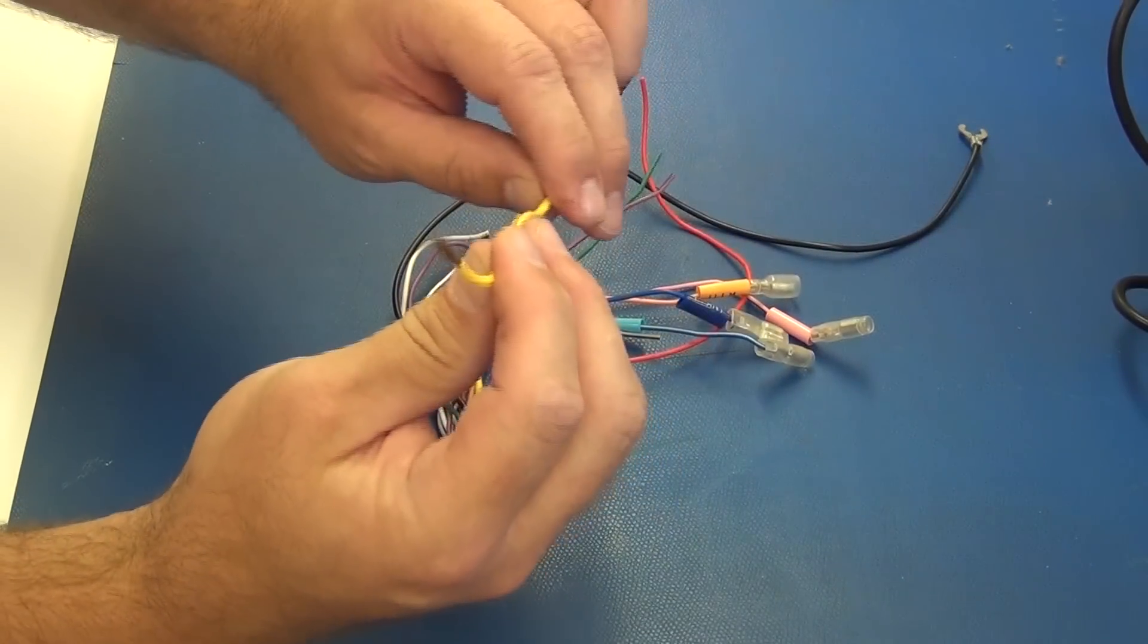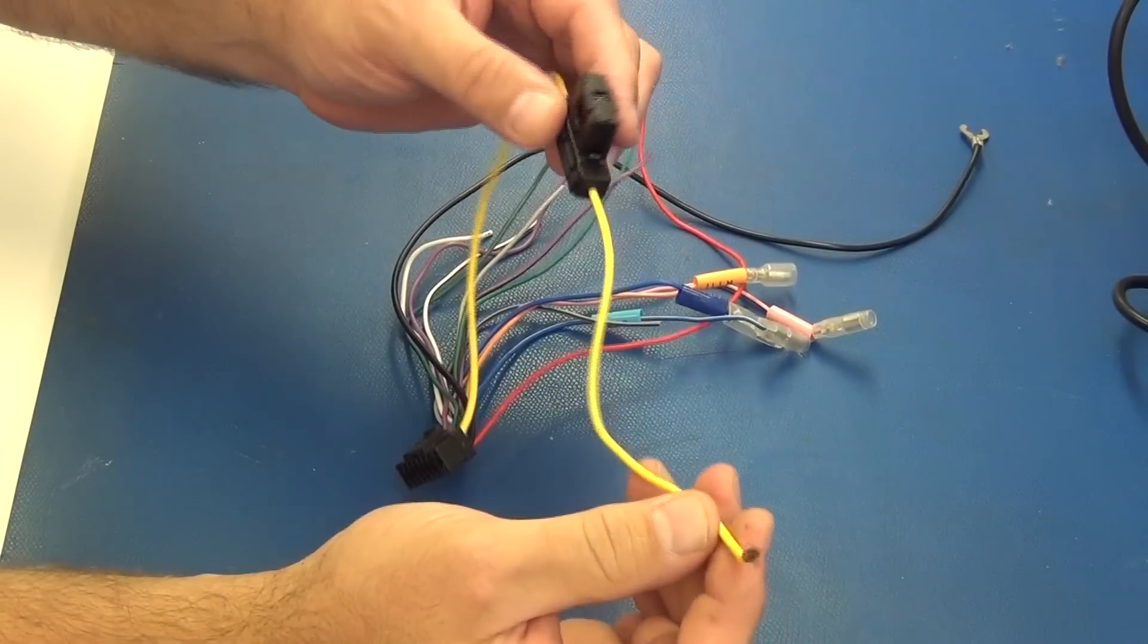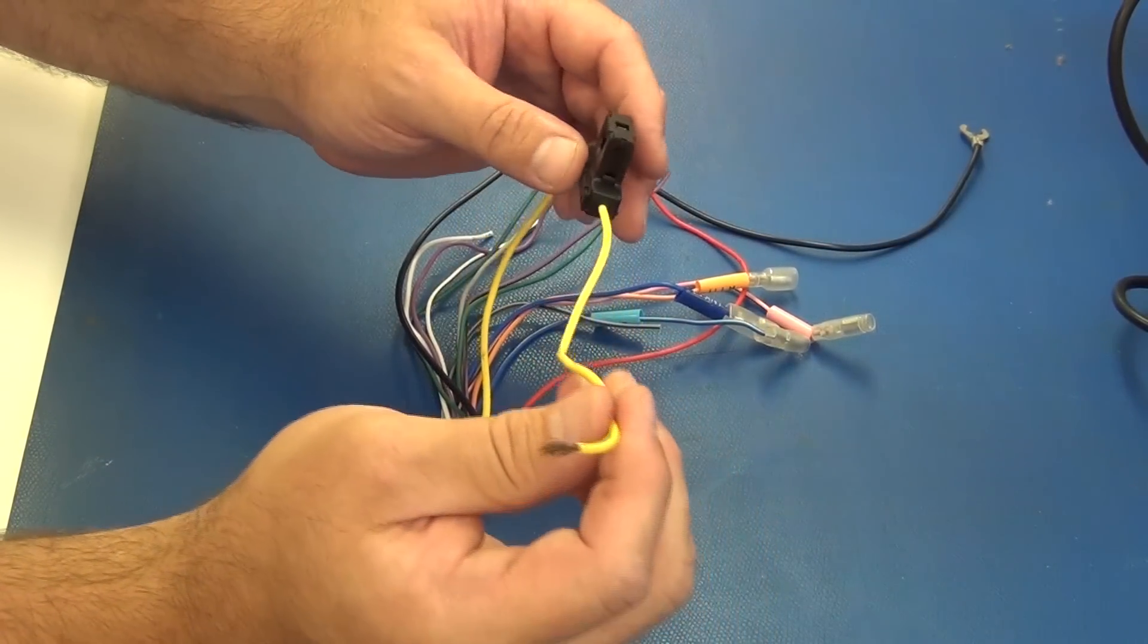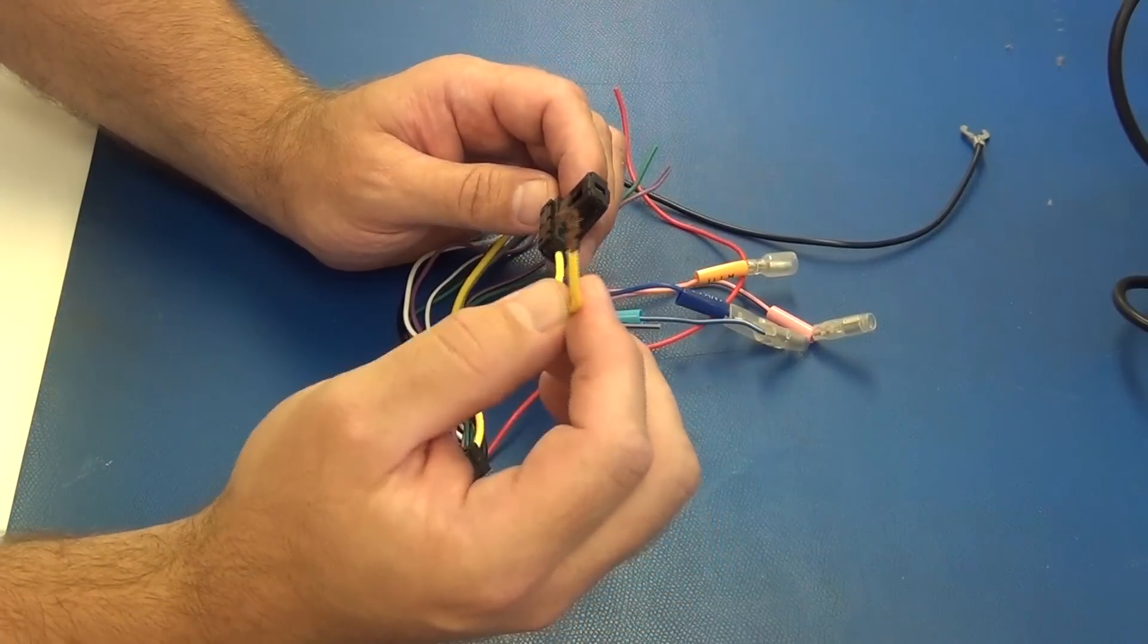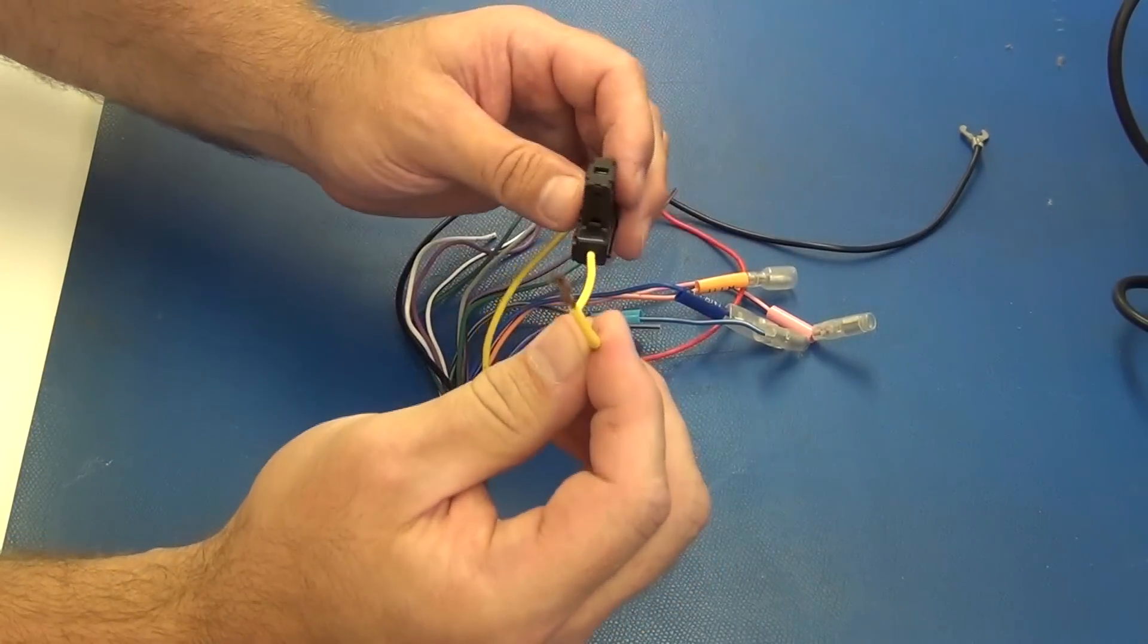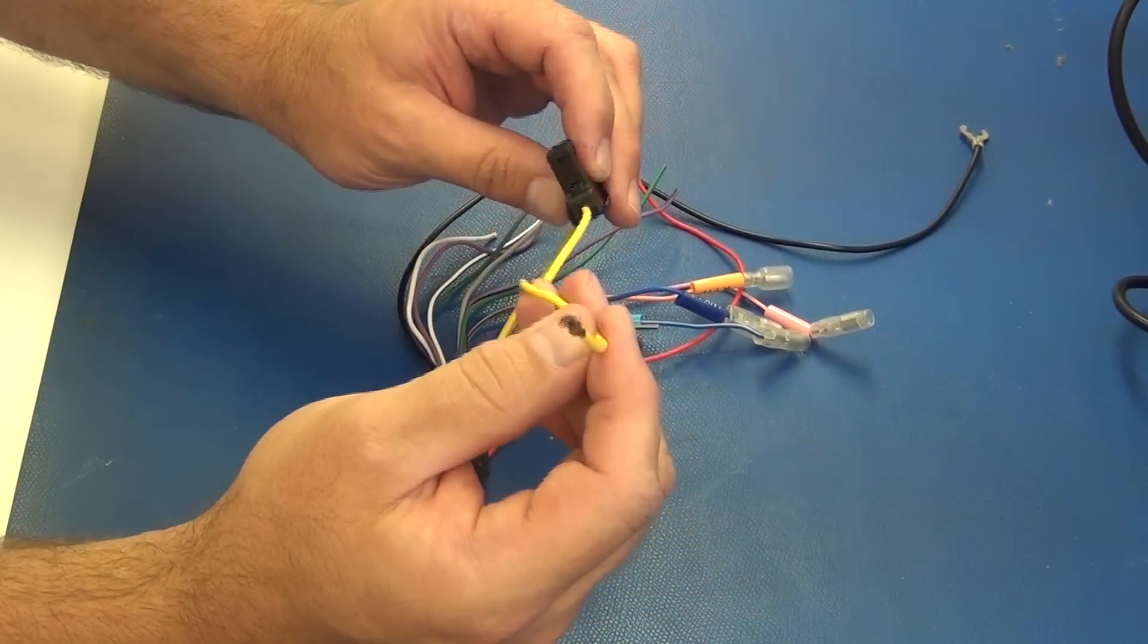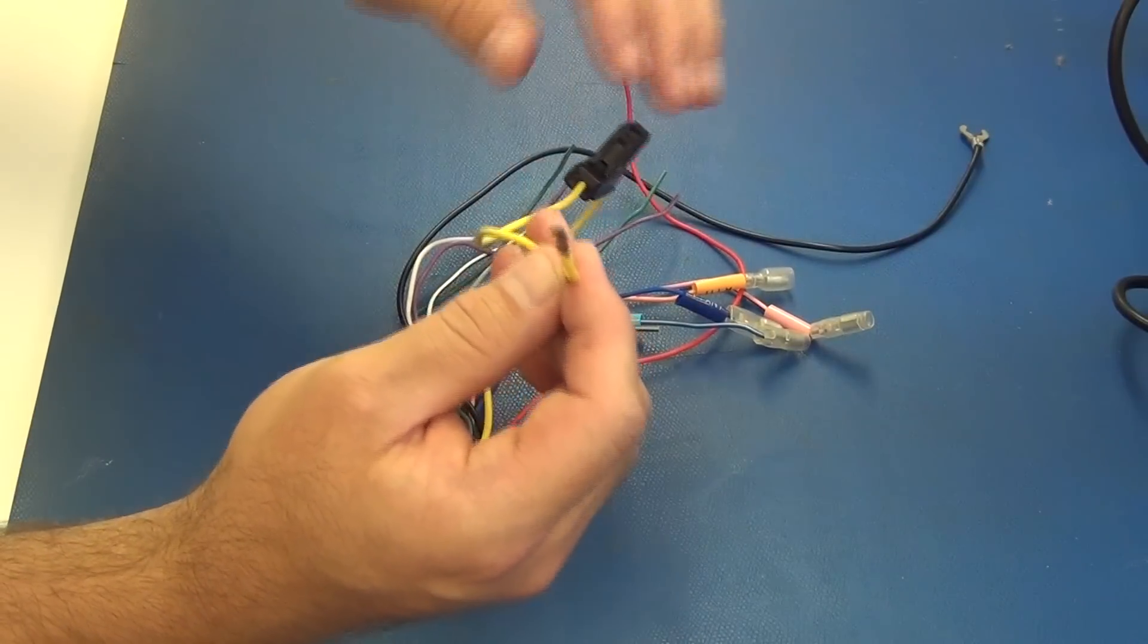This has to go back to the battery. It's fused, and whenever you run something back to the battery, you should also have a fuse very close to the battery. You may be able to find a full-time power wire in the fuse box of the vehicle. Again, depending on the vehicle, it might be easier to just go right back to the battery. I prefer that.